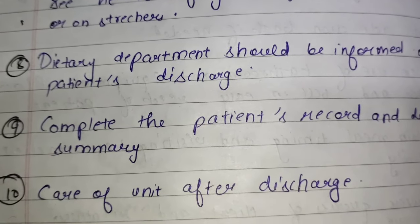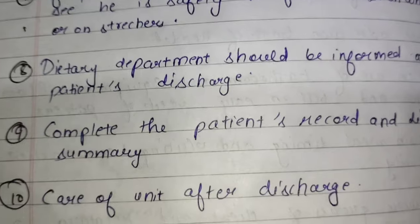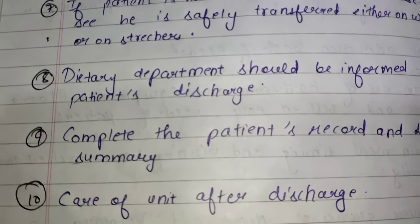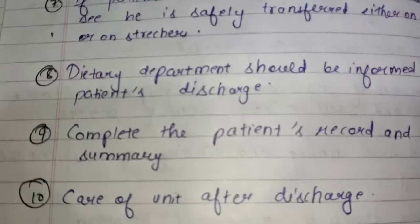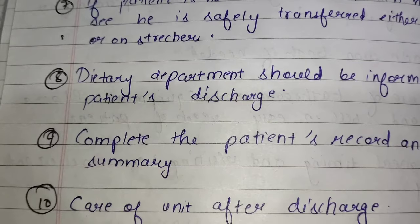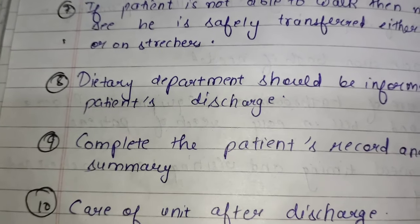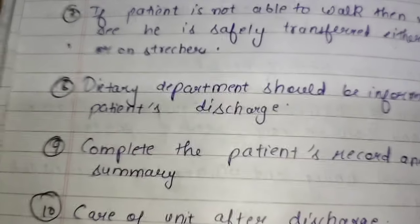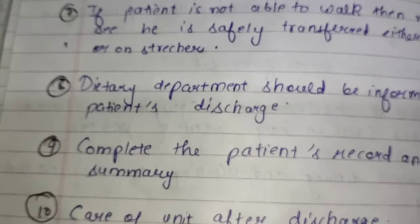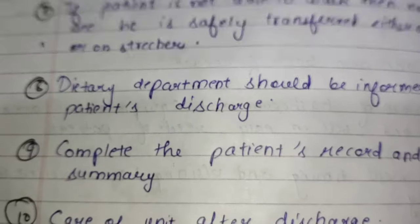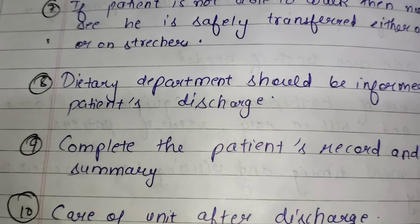Last point is care of unit after discharge. Patient ki discharge hone ke baad jo unit hoti hai — yaani jo ward hota hai jismein patient ko rakha gaya tha — usko achhe se clean kiya jata hai. Rooms ko clean kiya jata hai, aired kiya jata hai, windows aur doors khol diye jaate hain, furniture achhe se wash aur clean kiya jata hai, unwanted things discard kar di jaati hain, aur bed linen laundry mein bhej di jaati hai. Agar patient ko communicable disease thi, to us room ko achhe se fumigated kiya jaega, aur mattress, pillow, aur blanket ko sunlight mein expose kiya jaega.